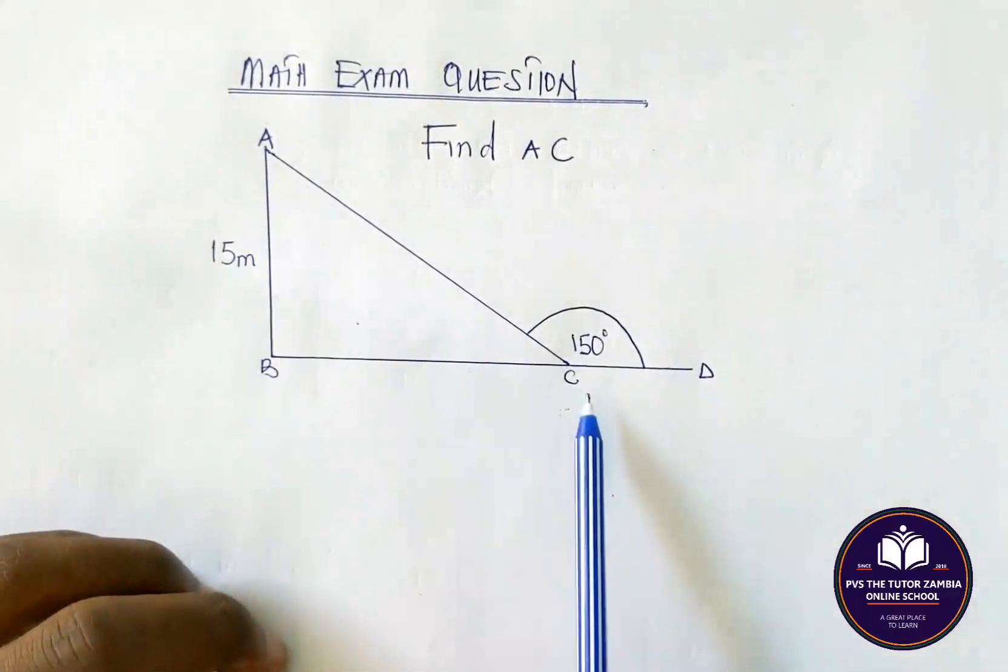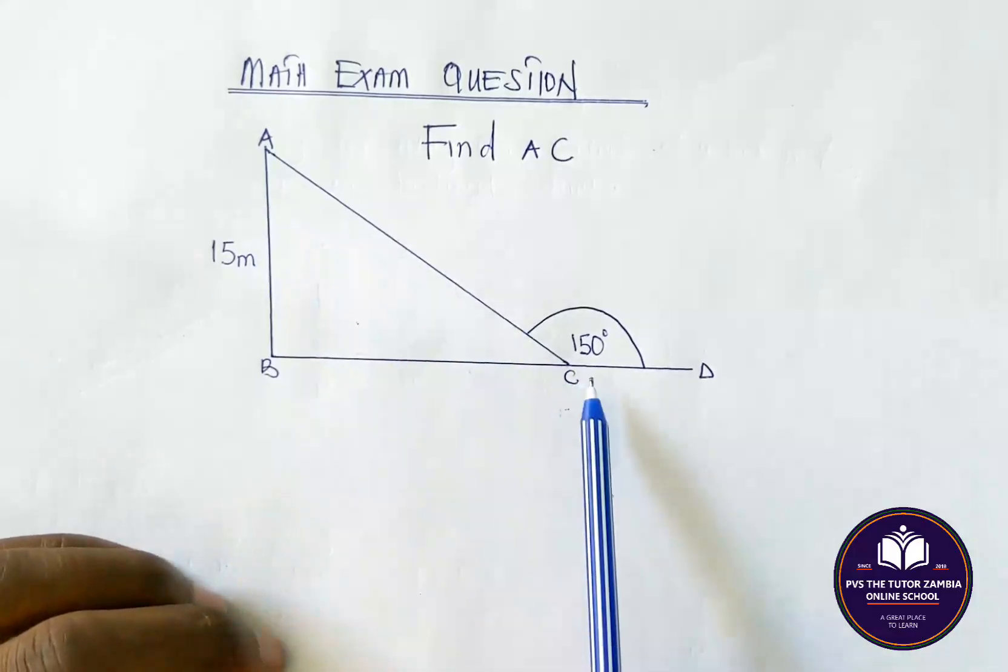It says find AC. Now when you look at AC, AC is just the hypotenuse, right?